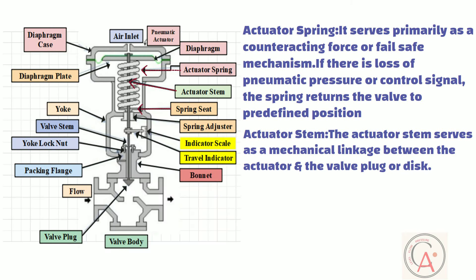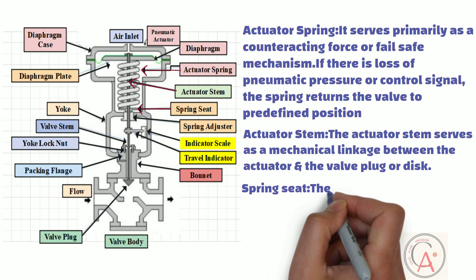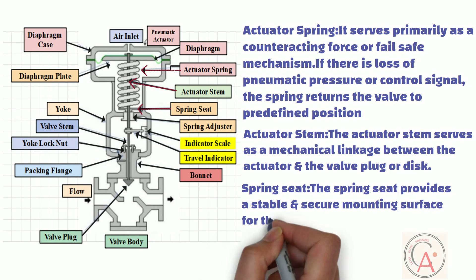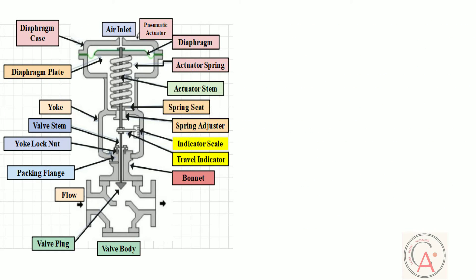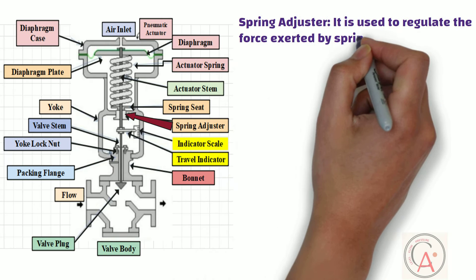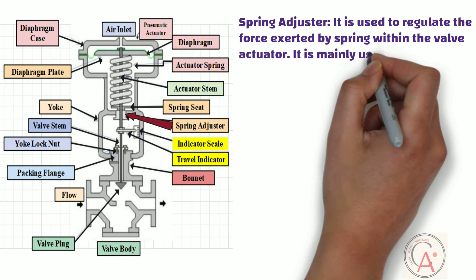This part is known as the spring seat. The spring seat provides a stable and secure mounting surface for the actuator spring. Another crucial part is the spring adjuster. It is used to regulate the force exerted by the spring within the valve actuator. It is mainly used for bench set adjustment.